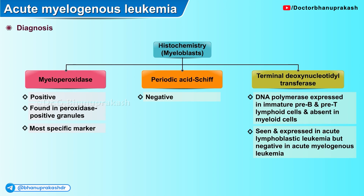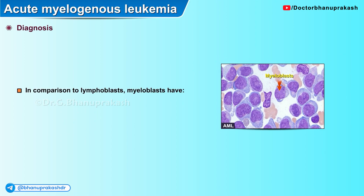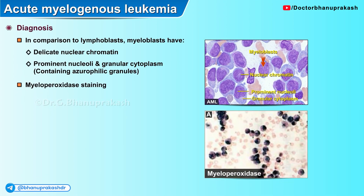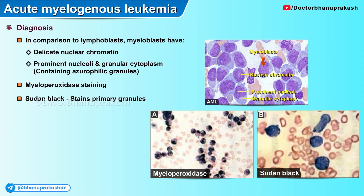TdT adds N-terminal nucleotides in the VDJ exons, enabling junctional diversity. A histopathological image of peripheral blood in acute myelogenous leukemia shows that, compared to lymphoblasts, myeloblasts have delicate nuclear chromatin, prominent nucleoli, and granular cytoplasm containing azurophilic granules. Another image shows the characteristic ink-dot pattern due to staining of the myeloperoxidase enzyme. Panel B shows Sudan black staining of the primary granules in acute myelogenous leukemia.